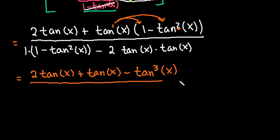And then in the denominator, if we start simplifying a little bit, when we multiply this in, we would have 1 times 1, which is just 1, minus tangent squared of x, minus 2, and if I simplify these two together, tangent x times tangent x is just tangent squared x.